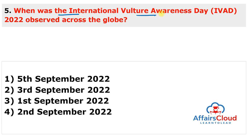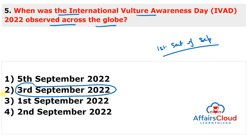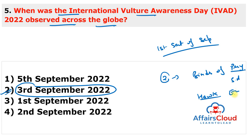International Vulture Awareness Day 2022 was observed on 3rd September 2022, as it falls on the 1st Saturday of September each year. This day is jointly run by the Birds of Prey Programme of Endangered Wildlife Trust in South Africa and the Hawk Conservancy Trust in England. The Society of Wildlife Conservation, Education and Research, India organized a seminar on vulture conservation, and WWF India launched a 'Bring Back the Vultures' poster.